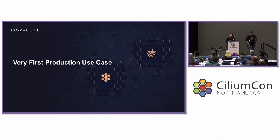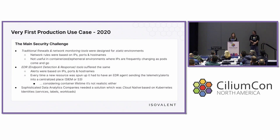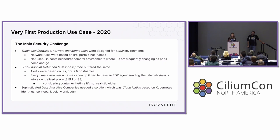So what was actually the very first production use case? It came from a sophisticated data analytics company. They needed a cloud-native, Kubernetes identity-aware solution to replace their traditional firewalls, network monitoring tools, and EDR systems. The problem was that their network rules were based on IPs, ports, and hostnames — not really useful in containerized environments where IPs frequently change and ports come and go. Their endpoint detection and response tools suffered the same issue: all alerts were based on IPs, ports, and hostnames. And every time they created a new resource, it had to have an EDR agent sending telemetry to a centralized system — not realistic in a Kubernetes environment.